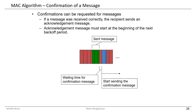That's all for the contention access period. This is the algorithm for medium access in the contention access period for standard 802.15.4, which is the basis for the ZigBee standard. Thank you.